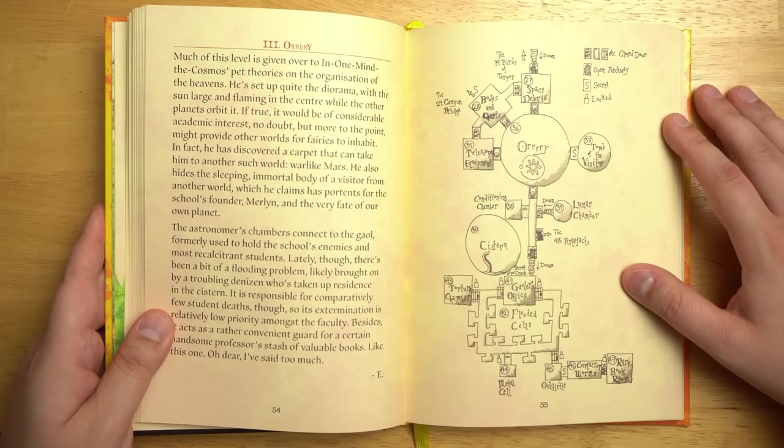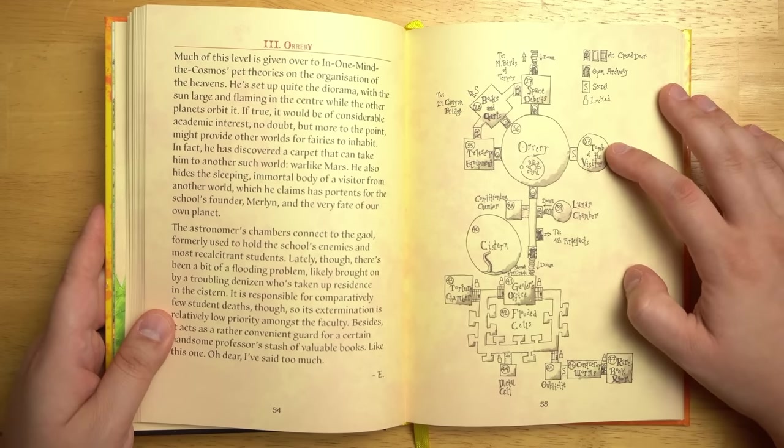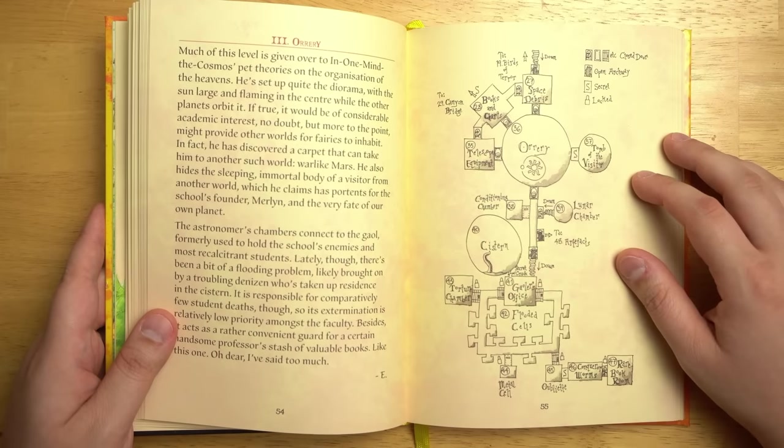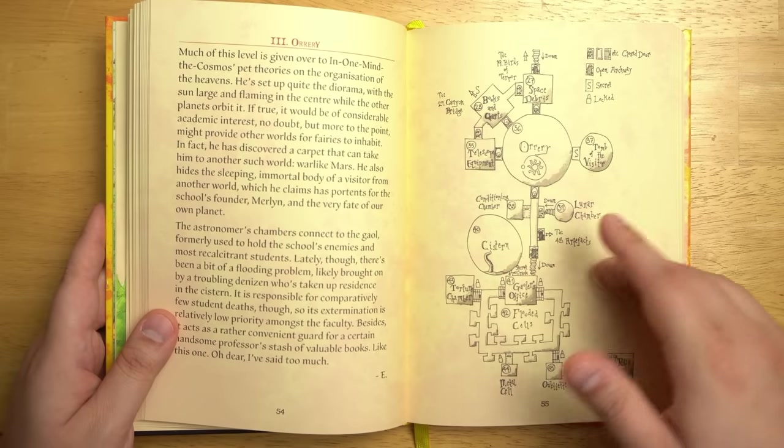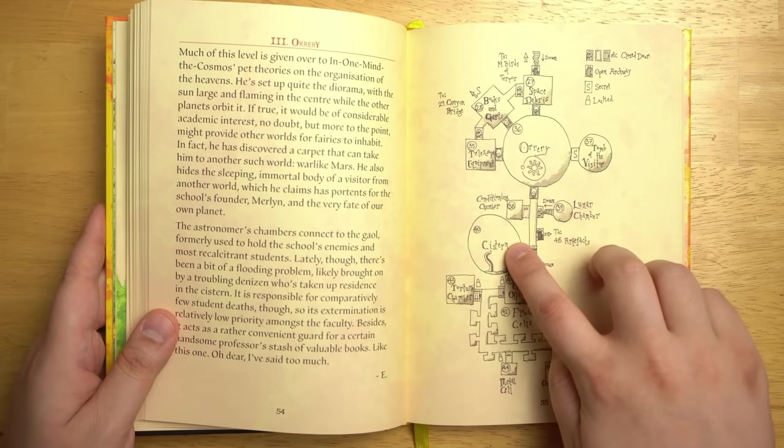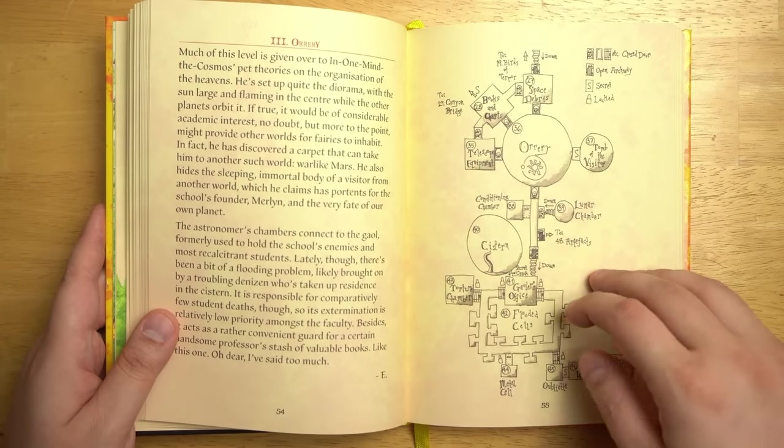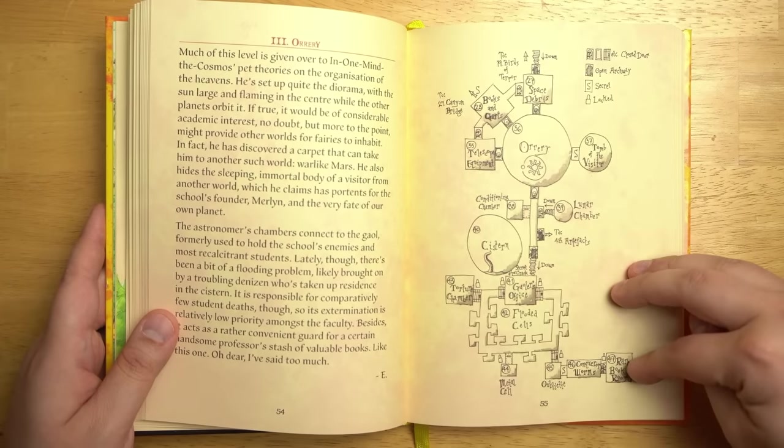Another level is very space themed where there's a big orrery that you can activate. You can even meet an alien in the tomb of the visitor. And there's a way to actually access a fortress on the planet Mars. Besides that, you can investigate this area down here where that's all been flooded with water. And there is a huge tentacly beast in here that can send his tentacles through these tunnels to try and grab you. So you'll have to probably deal with that to really get all the way over here to the rare book room.